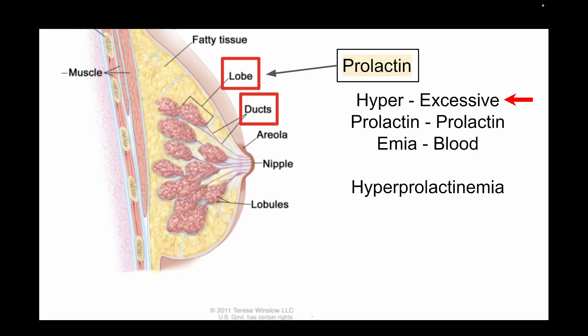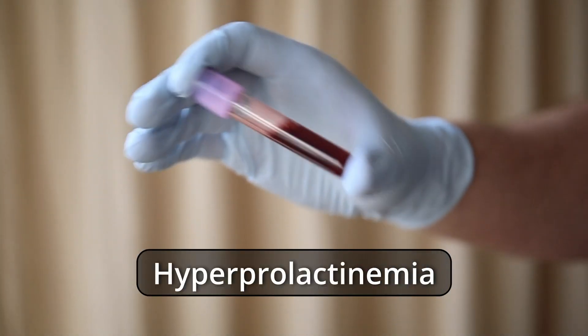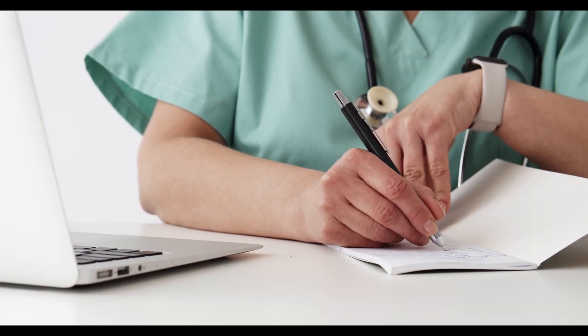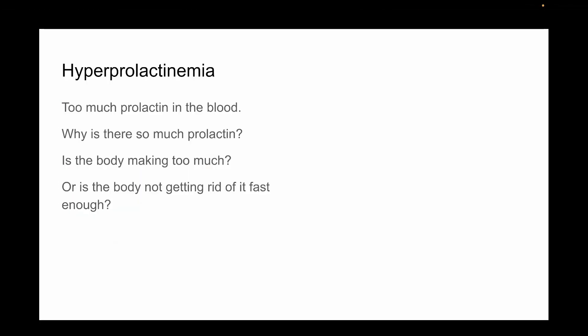When there's excessive prolactin in the blood, it's referred to as hyperprolactinemia. Hyperprolactinemia naturally occurs around childbirth so that milk can be produced for the newborn. But when blood tests reveal hyperprolactinemia outside of a recent delivery, a doctor must consider whether the body is producing too much prolactin or not getting rid of it.